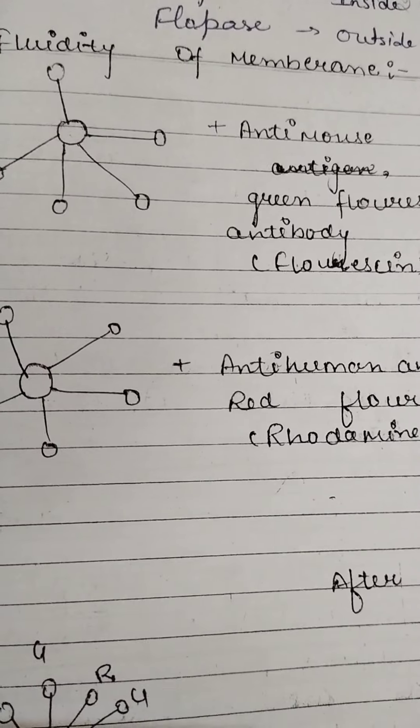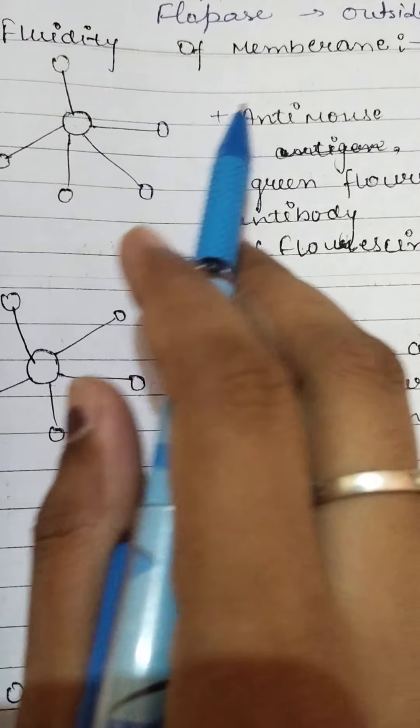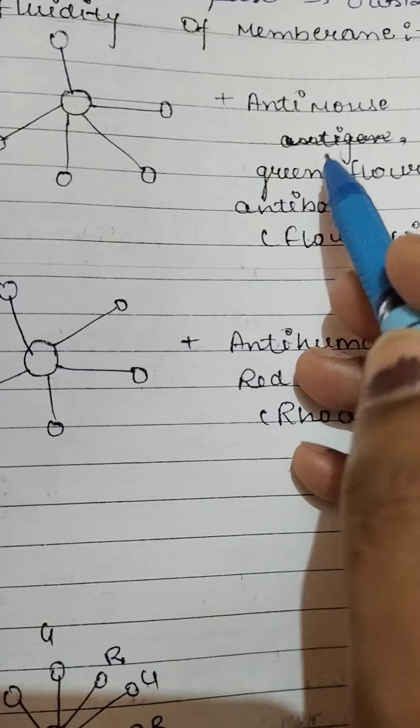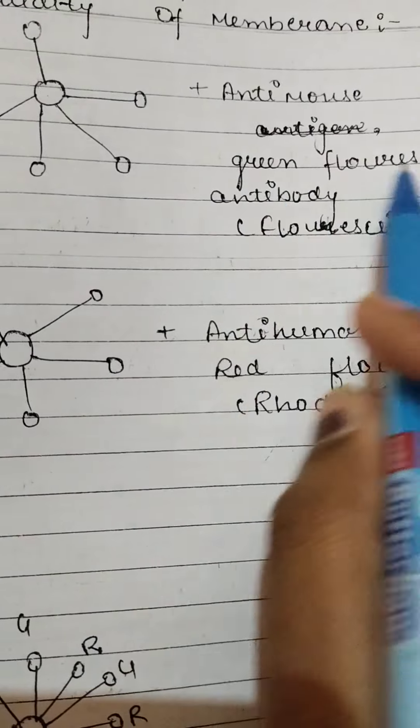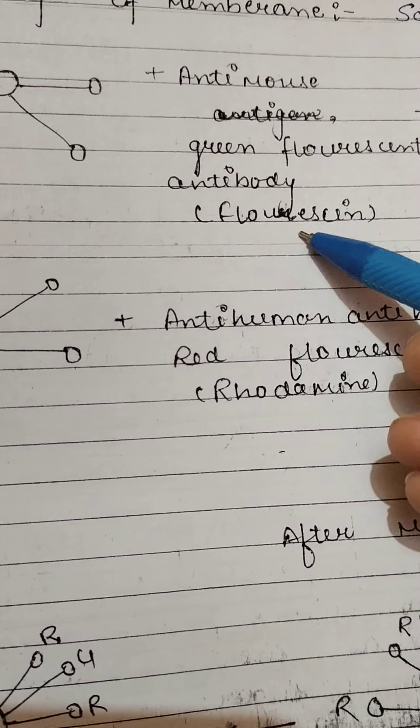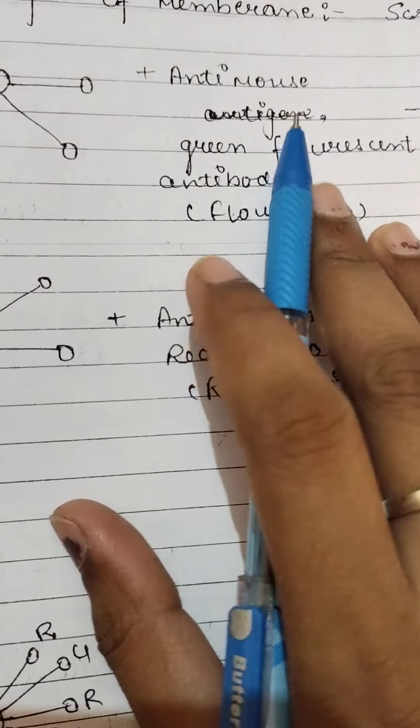Plasma membrane shows fluidity, so an experiment is performed to demonstrate this. Here you have some molecules and anti-mouse green fluorescence antibody. You have taken the anti-mouse green fluorescence and done dye.